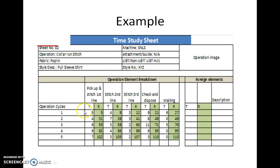This is an example showing a time study taken for collar stitching made in a single needle long stitch machine for a full sleeve shape. Here you can see a tabular column showing the stopwatch readings in the shaded columns. There are 5 cycles. The elements are: pick up, first stitch and first line, second stitch, second line, third line, check and dispose — all the elements of each cycle while making the collar stitch.